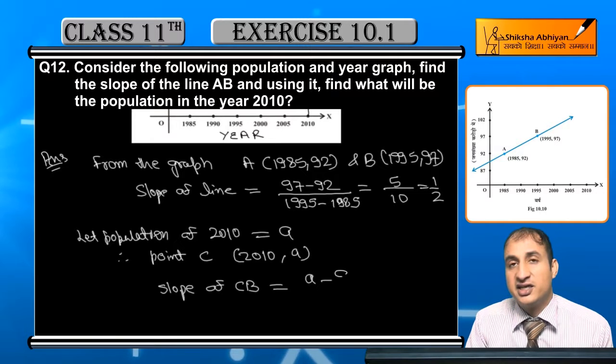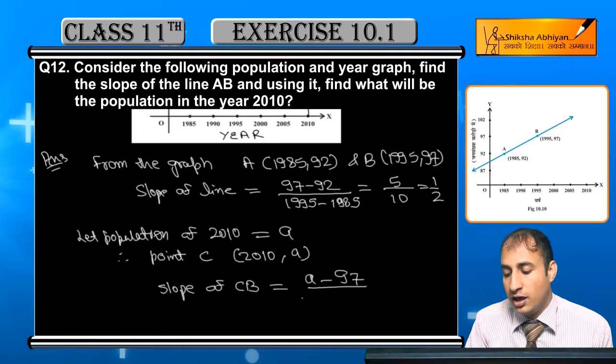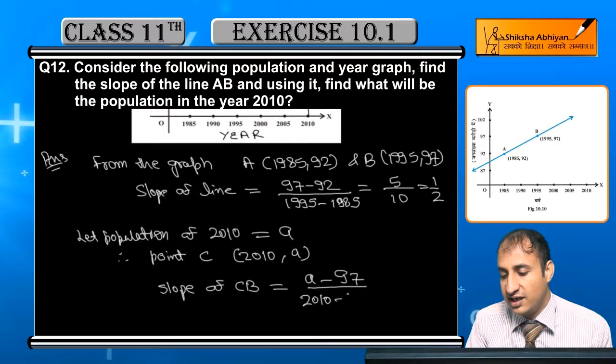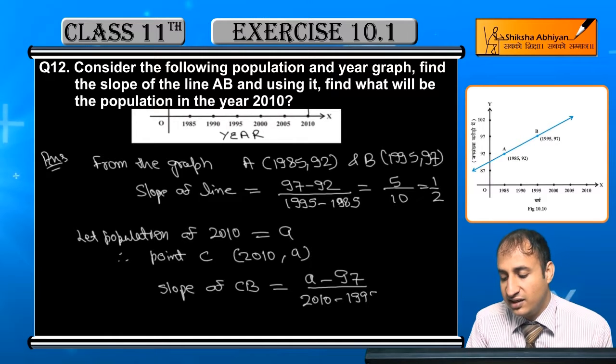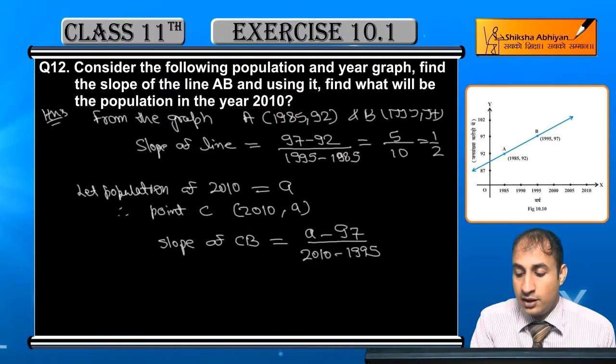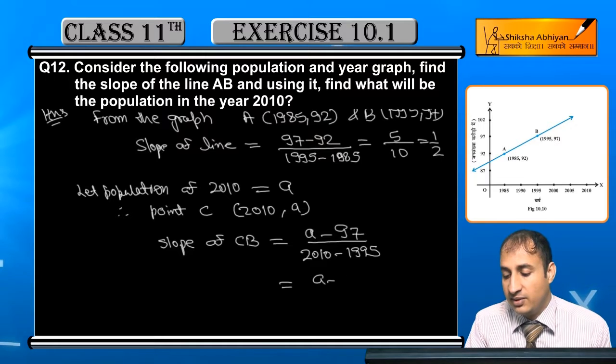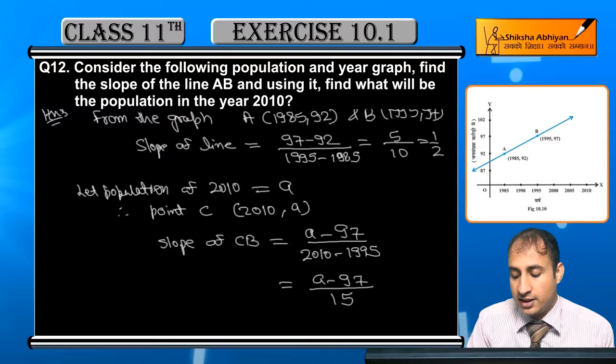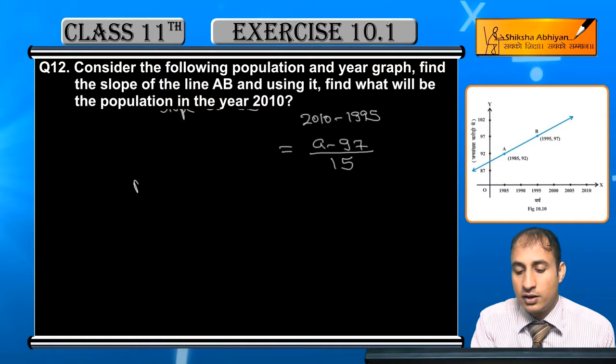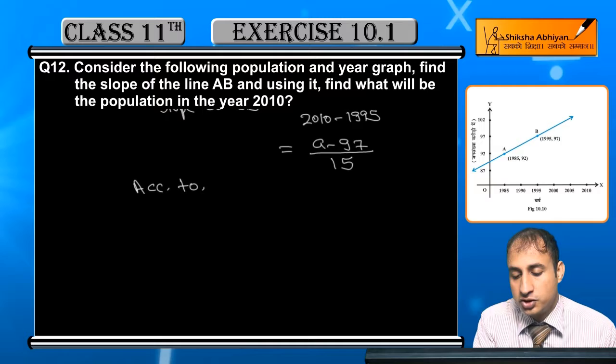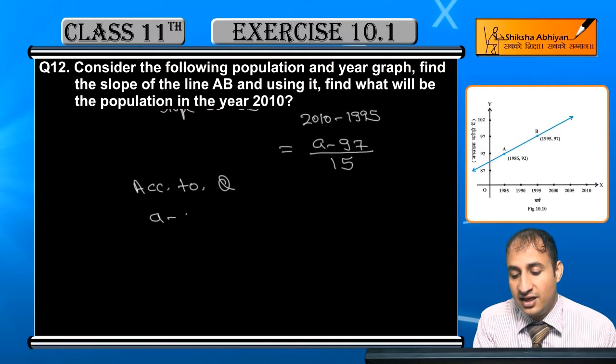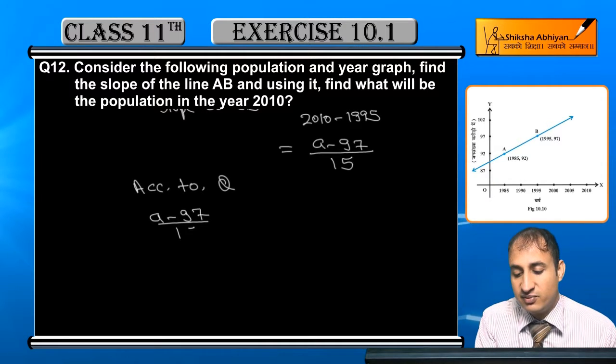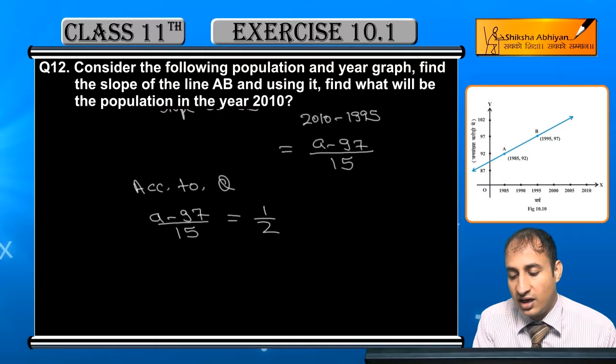So A minus 97 upon 2010 minus 1995. This A minus 97 over 15. Now, slope of CB equals, according to the question, A minus 97 by 15 will equal 1/2.